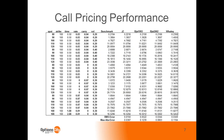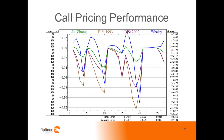Likewise for call prices — on average for calls, Chu-Jong was about twice as good as Whaley. The Bjerksen-Stensland alternatives were not remarkably better. In fact, Chu-Jong was an outperformer in all cases.